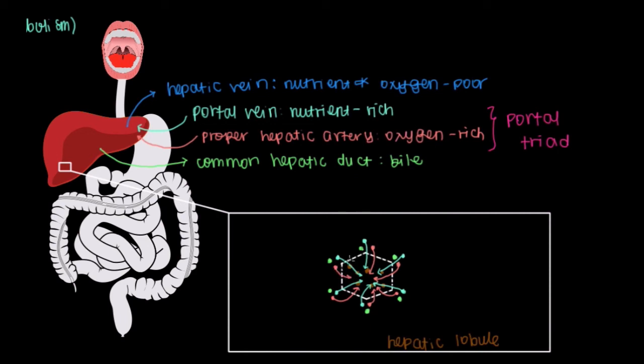We'll supply them with nutrients from these branches off of the portal vein. They're called sinusoids, sinusoids that come off the portal vein.